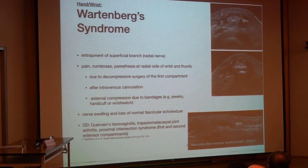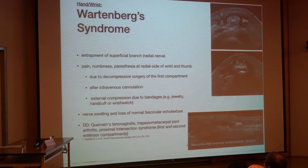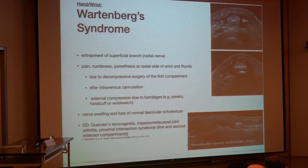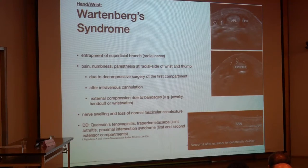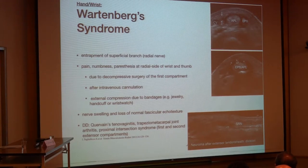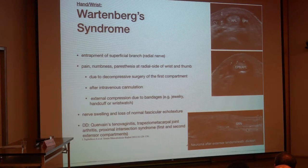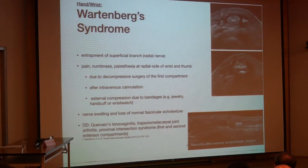Here is the typical location and presentation. This is the first extensor compartment, housing the abductor pollicis longus tendon and the extensor pollicis brevis tendon, covered by the retinaculum. Close by is this small nerve, the superficial radial nerve, which goes with the cephalic vein. We can see the nerve going over the first extensor compartment, with scar tissue after surgery of this compartment. In the longitudinal scan, we can see this tiny nerve increasing to a neuroma after surgery.